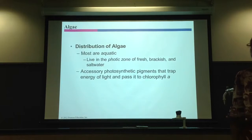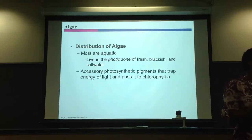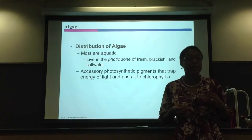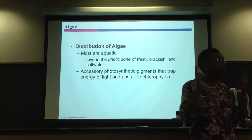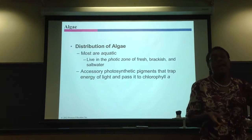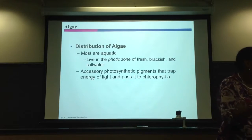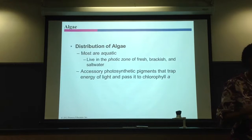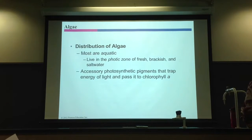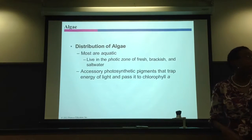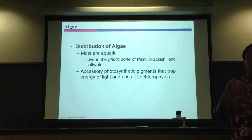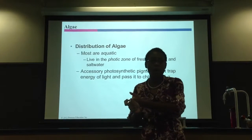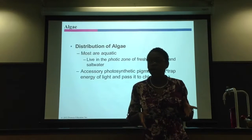Usually when the protozoans are doing conjugation, they're using their micronucleus to do it. Some protozoans have two nuclei: a macronucleus and a micronucleus. If they're doing sexual reproduction via conjugation, they primarily use their micronucleus. They use their macronucleus to do asexual reproduction. Now, with the fungi, they have cell walls.